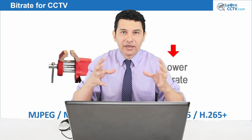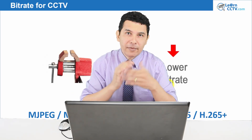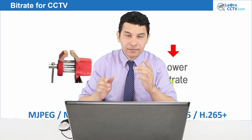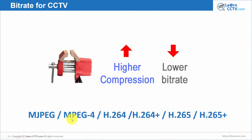Compression is when you compress your image using a mathematical algorithm. Older codecs include MJPEG and MPEG-4. Nowadays, people use H.264, H.264+, H.265, and H.265+. You can compress better using those newer codecs.